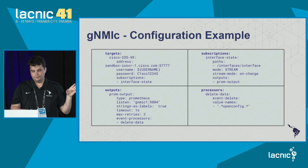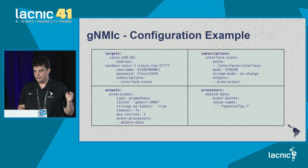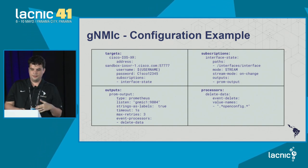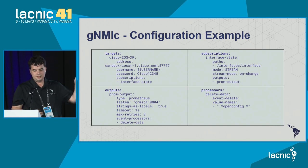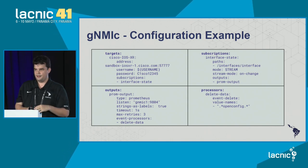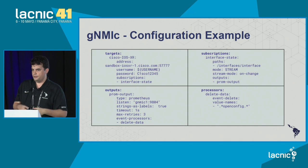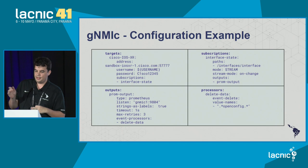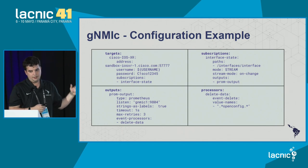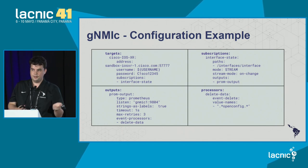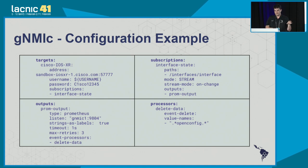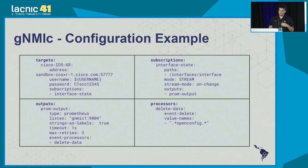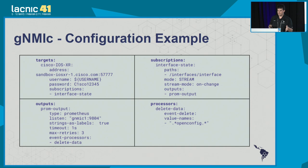We have the targets where you specify the device and how to access it. We have the subscriptions where you set paths inside the path area. Paths are available from your vendor. You choose the type — in this case I want stream mode because I'm collecting interface information. I want to see when the interface goes down, when the protocol goes down, when it goes up, and everything related to this.